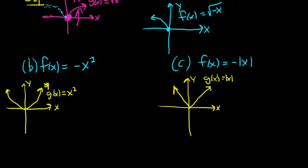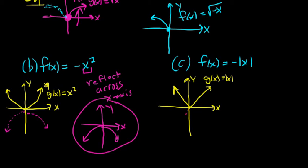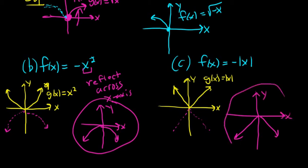In part b, we have a negative in front of the y-value, so we reflect across the x-axis. You take the U-shape graph and flip it down across the x-axis. So it looks like an upside-down U — that's the answer to part b. For part c, it's the same idea: reflect the V-shape across the x-axis, giving you an upside-down V. That's the answer to part c.